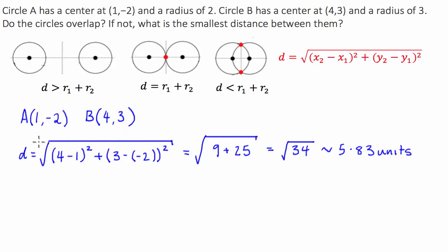Now this is the distance between our two centers of the circles. We've got circle A with radius 2 and circle B of radius 3, so we're going to add the radiuses together. We find that the radius of A plus the radius of B is equal to 5.